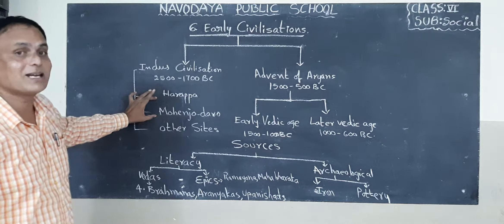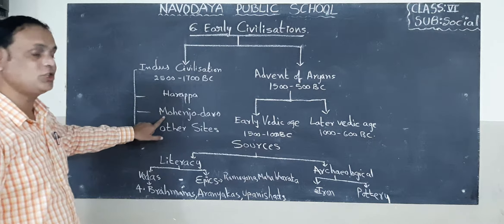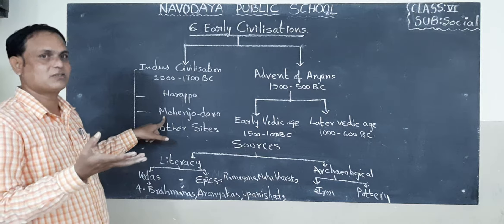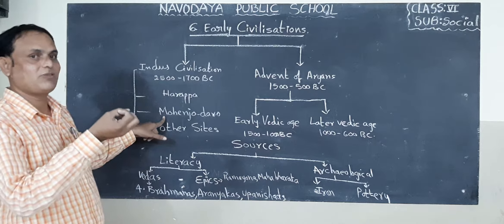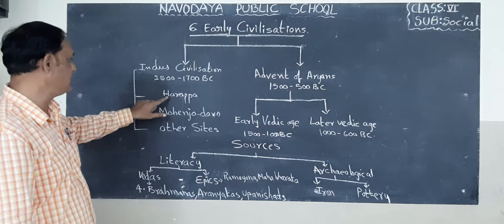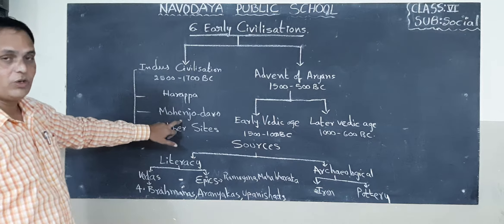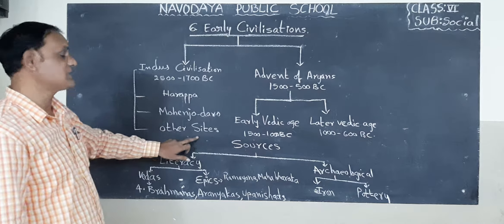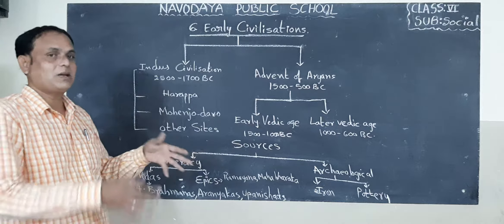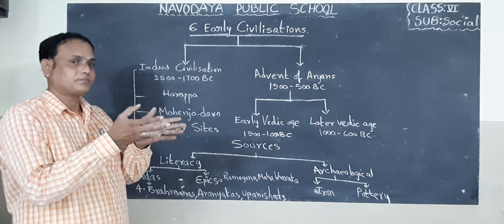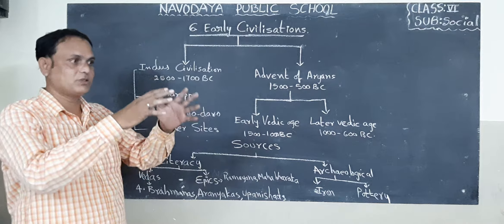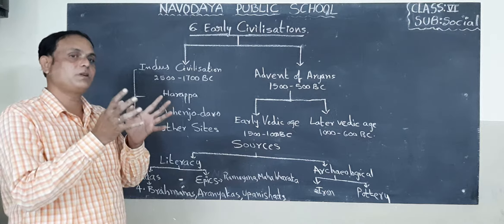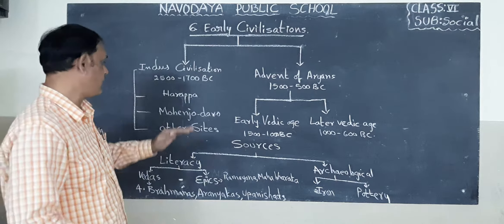Archaeologists found Harappa and Mohenjo-daro — these are the sites where they lived, and now the sites remain. Many other sites are also there. At the time of the British, when they laid railway tracks, they found some kinds of bricks. After that, archaeologists found these bricks belonged to Indus Valley civilization.